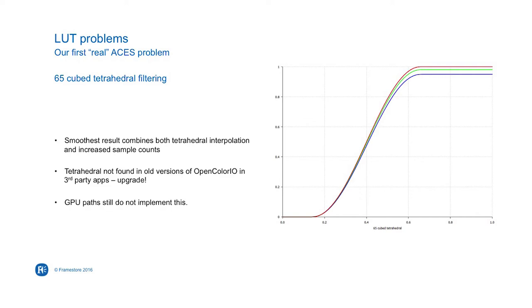Something else we do is use an odd number of points in our LUTs, so you can exactly represent the neutral. This is something we would encourage people to do. Powers of two are great for GPUs, but unfortunately not for getting a good neutral.